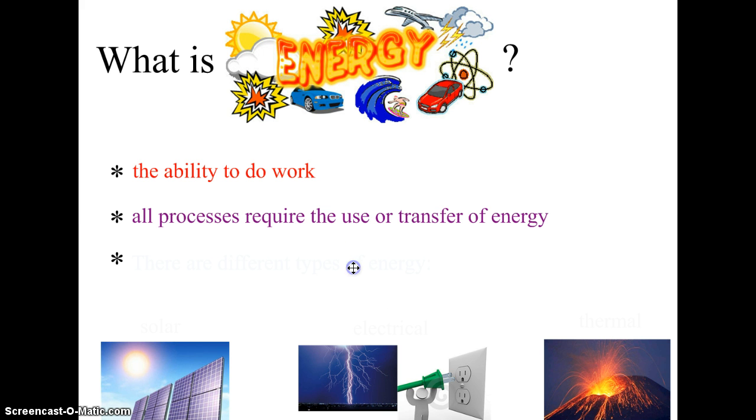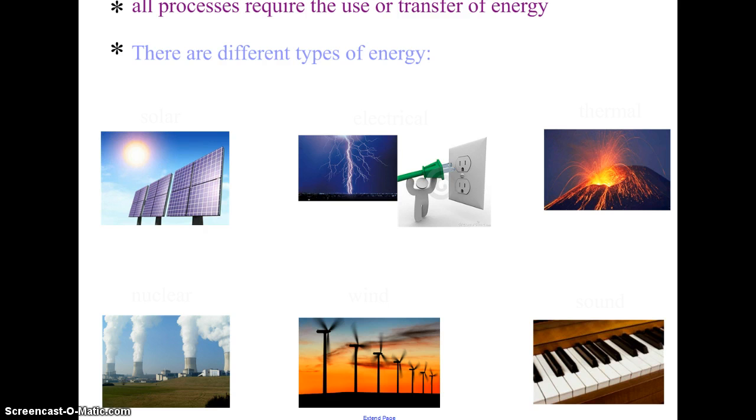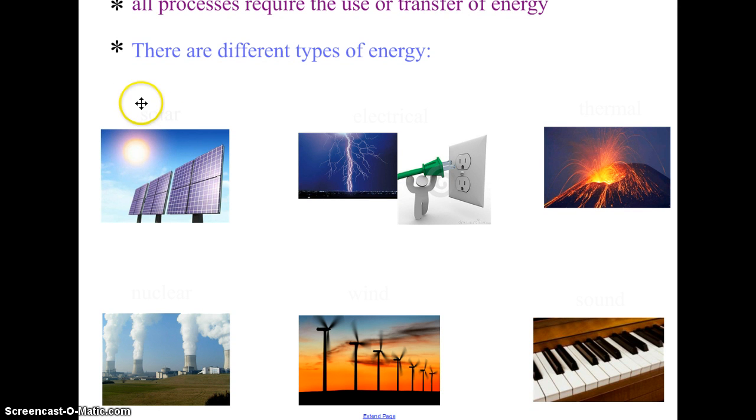So you already know that there are a number of different kinds of energy. And just to go through a few of them that you're familiar with, you are all familiar with solar energy, energy from the sun. You have all plugged things in. So you've utilized electrical energy. There is heat energy, which is called thermal energy. We just finished learning about radioactive decay, which releases nuclear energy that we use in nuclear power plants. We can harness energy from the wind. And some of you who play instruments and others who like to listen to music, you are very familiar with sound energy. So these are just a few types of energy.